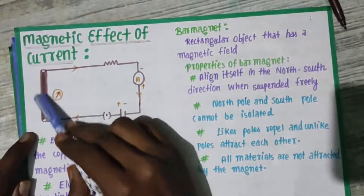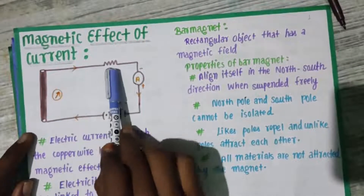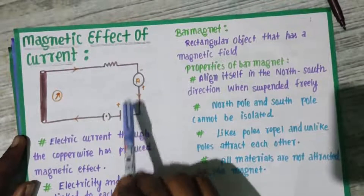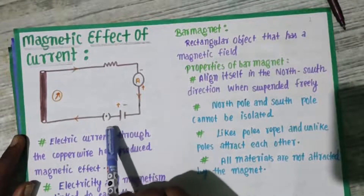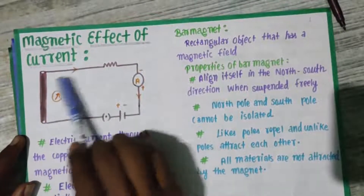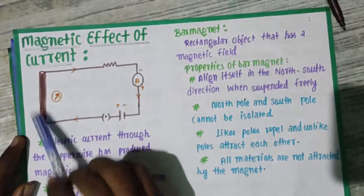You have a copper wire. The copper wire is connected to a resistor, an ammeter, a battery, and a plug key. This is a simple electric circuit.